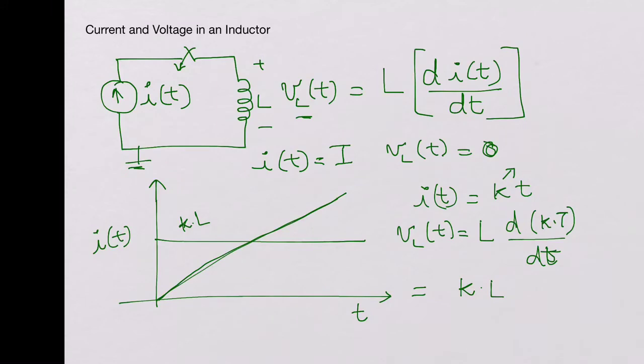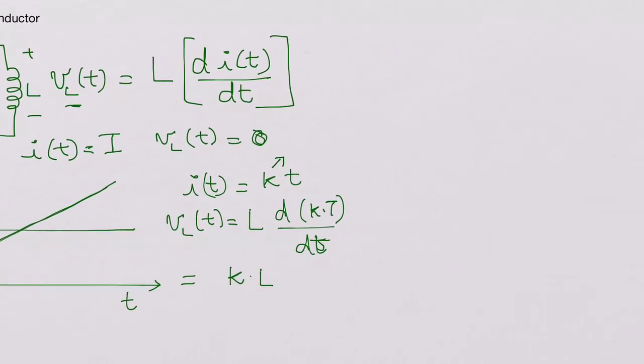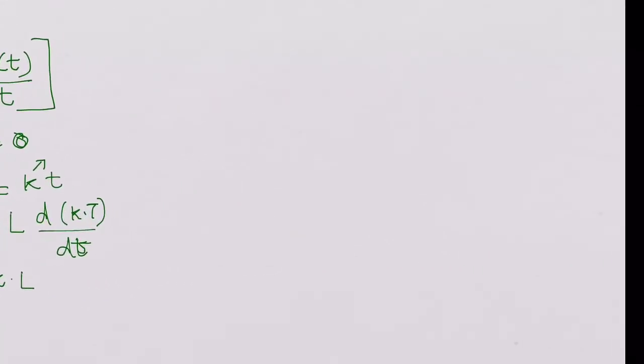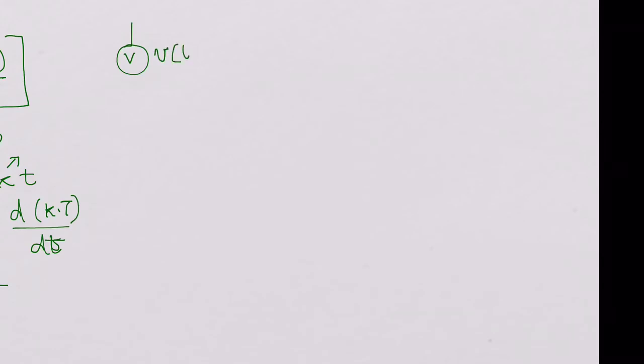Now let's take another case where you put a voltage source V(t)—not a DC voltage source—and you apply it across an inductor.